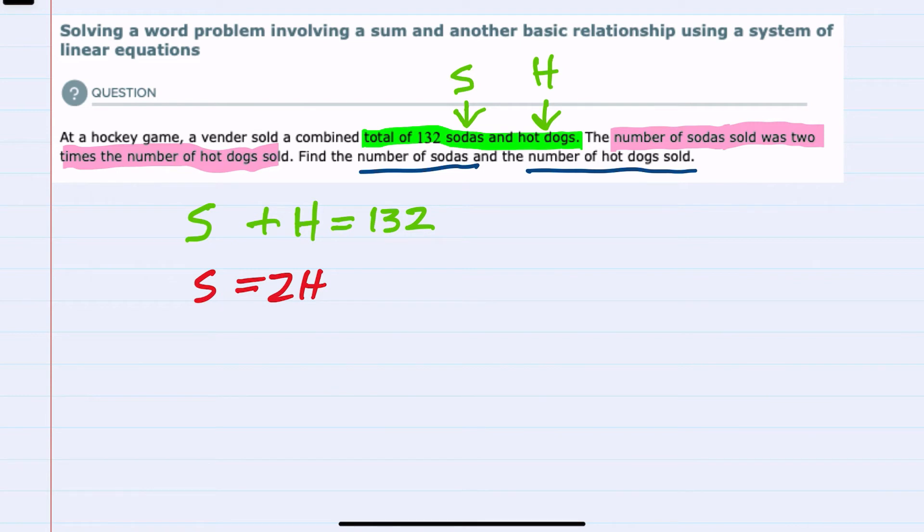Since the second expression is already solved for S, I'm going to substitute that S value into the top and rewrite it. Replacing the S with 2H, the top expression would then be 2H plus H equals 132.